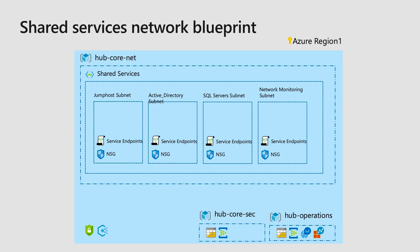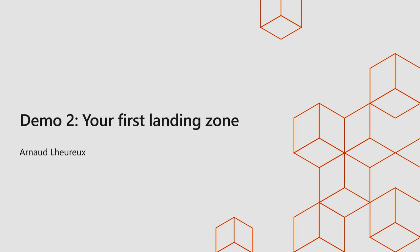The shared services blueprint is another one we use to lay out the networking and form the foundation of the shared services network. In this example, we're putting in an active directory subnet, a SQL server subnet, a monitoring network — different options. Those elements are designed to focus only on shared services. The second demonstration will show how you can build your first landing zone — Arnaud, share a little bit more on this landing zone.